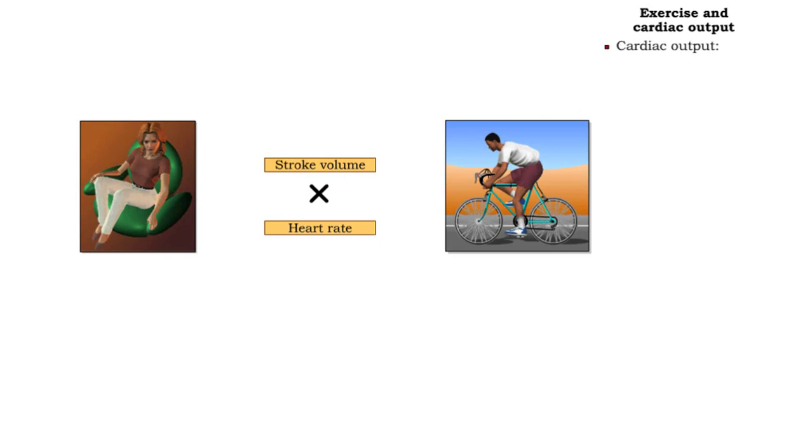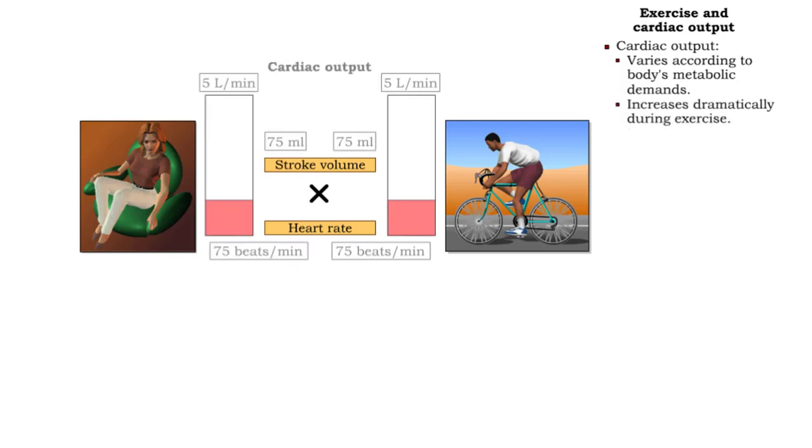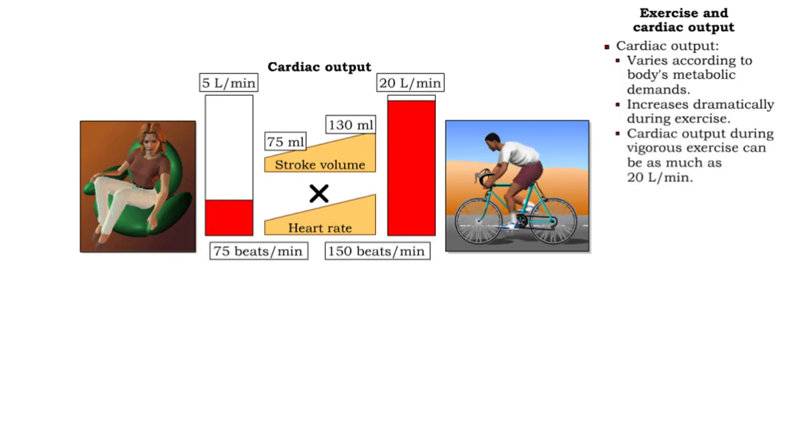Cardiac output is not constant. It varies with the body's metabolic demands. Mild exercise will double cardiac output, while an intense workout can increase output as much as 4-fold to 20 liters of blood each minute.